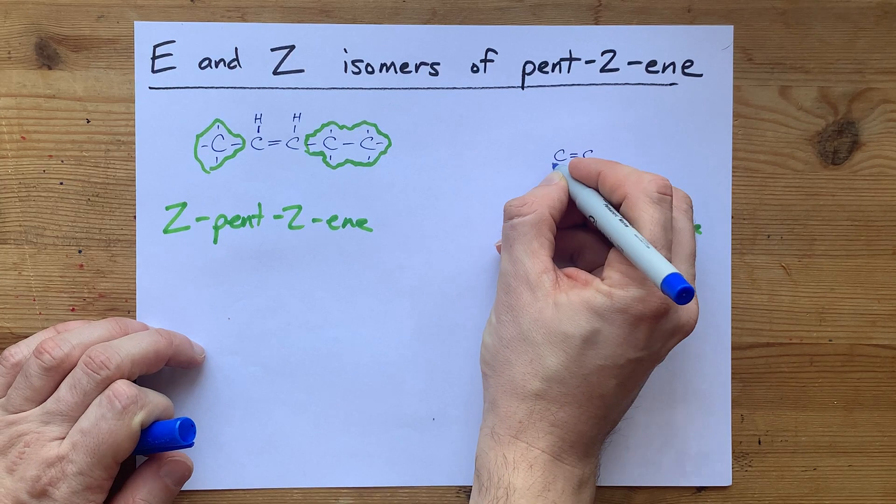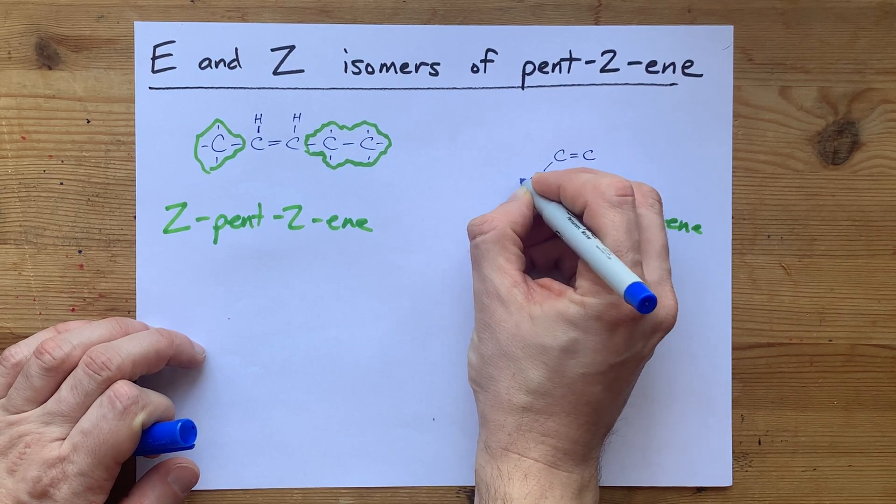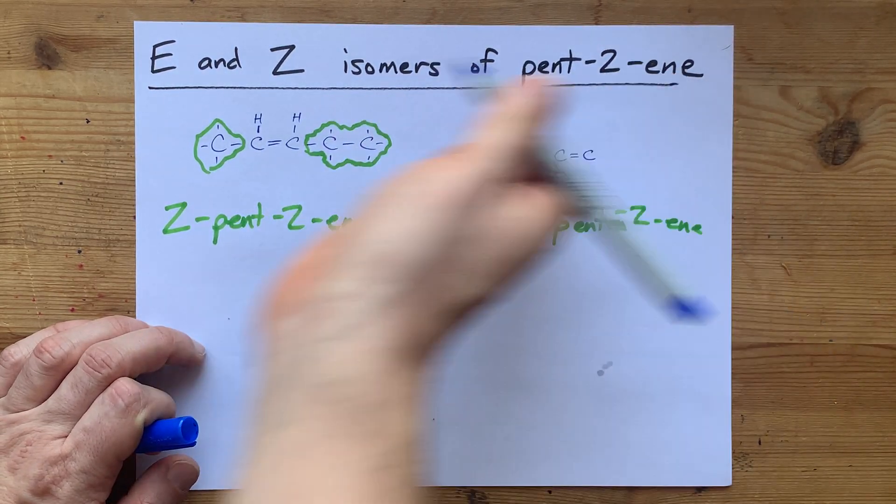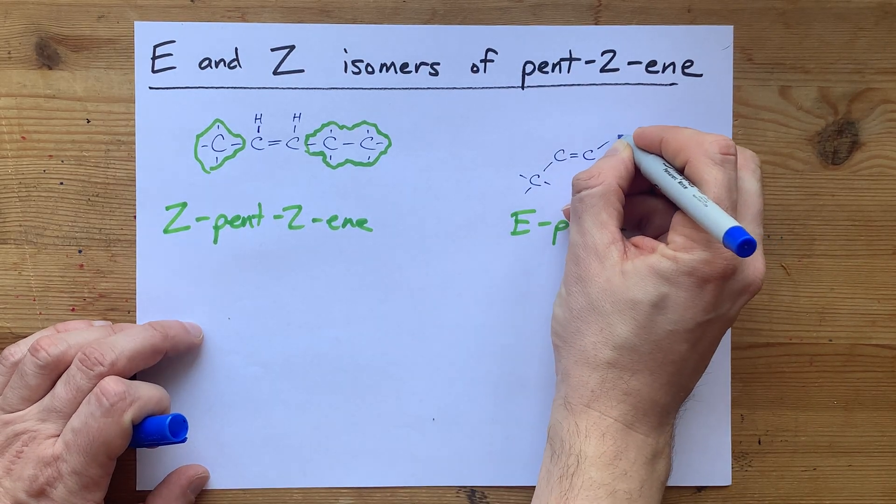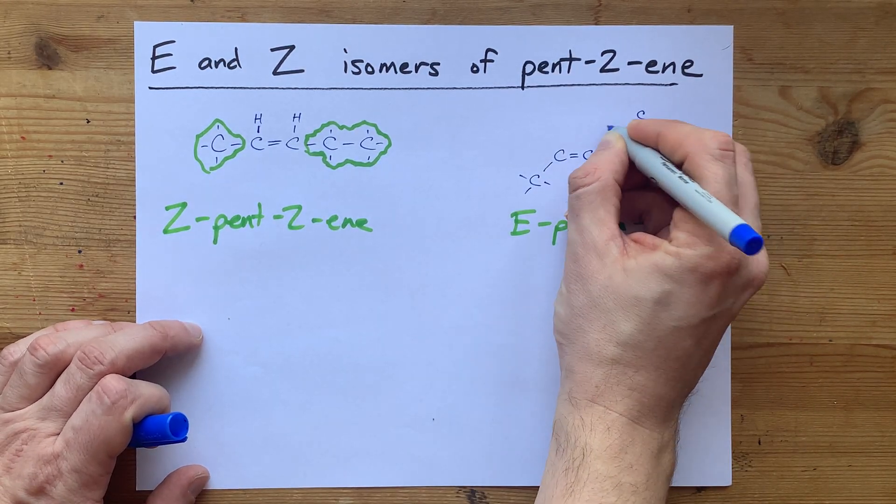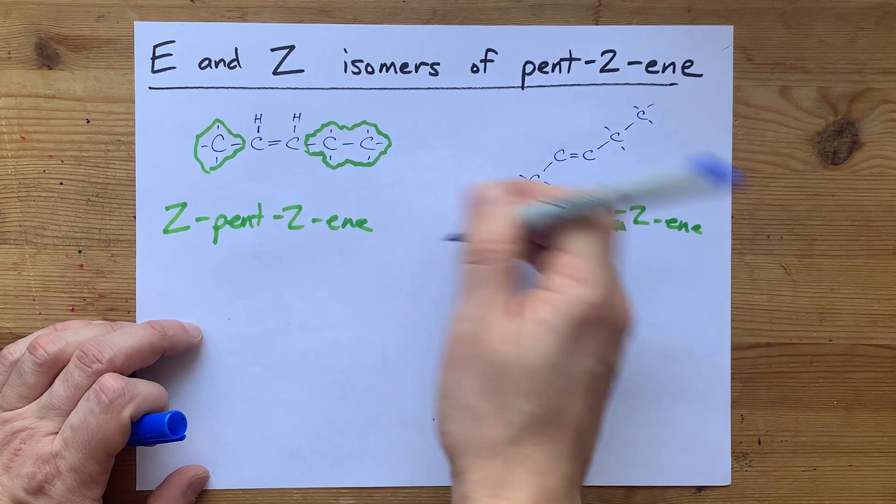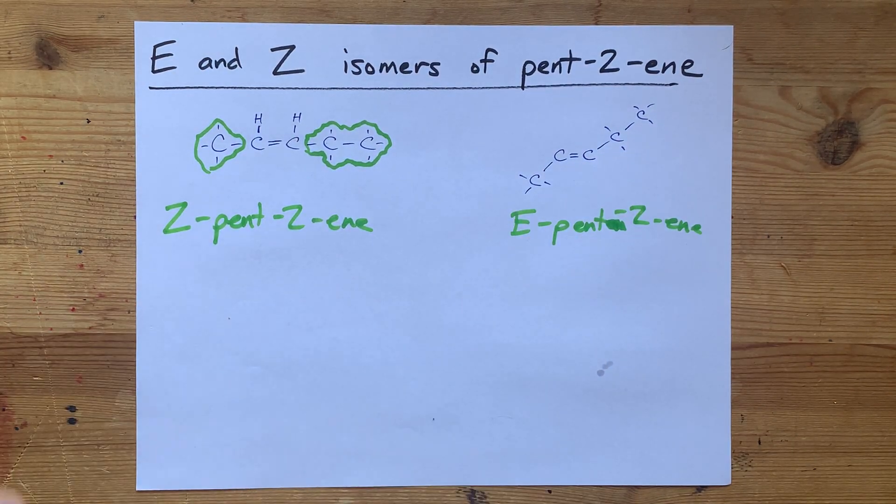I'm going to need one higher priority group going upward from the horizontal axis of the double bond and the other higher priority group on the other side of the horizontal axis of the double bond.